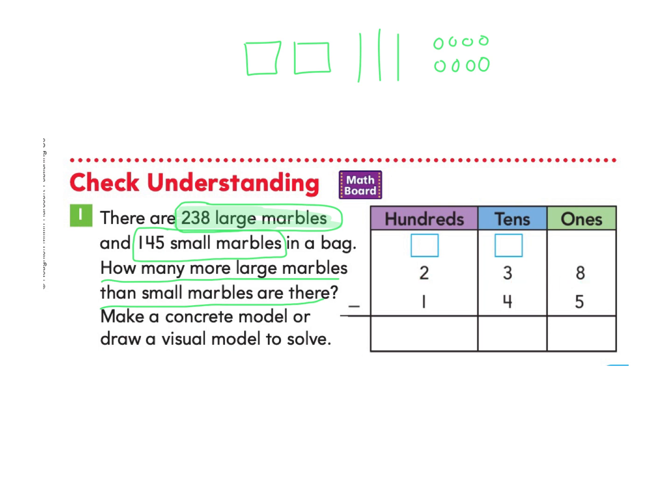And then we're going to take away, we're going to start with the ones, 145. So we'll start with a five. We can cross out five. And when we take five, here's that five. We had eight. We took five away. What did we get? We got three left over.